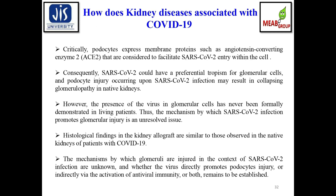Podocytes express membrane proteins such as angiotensin-converting enzyme 2 (ACE2) that facilitate SARS-CoV-2 entry within kidney cells. Consequently, SARS-CoV-2 could have preferential tropism for glomerular cells, and podocyte injury upon SARS-CoV-2 infection may result in collapsing glomerulopathy. However, the presence of the virus in glomerular cells has never been formally demonstrated in living patients, leaving the mechanism of glomerular injury unresolved.